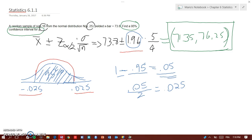That's what it means. So you are almost certain that when you collect all the data, it will be in this range, which is between 71.35 and 76.25.